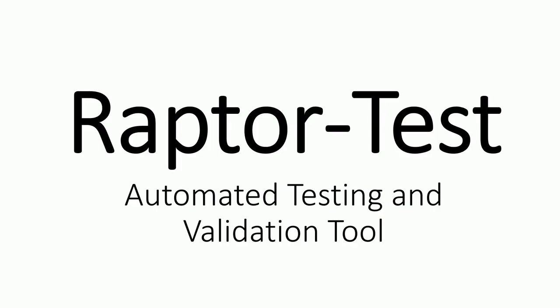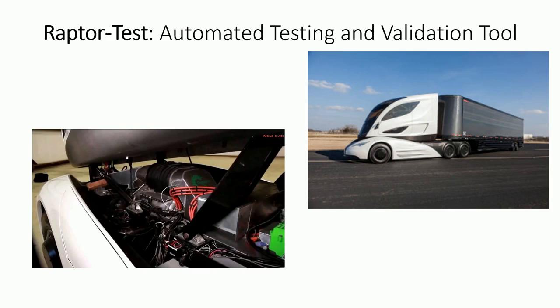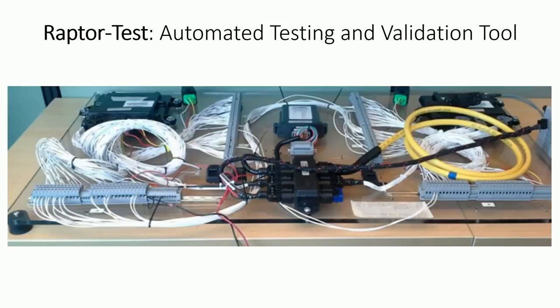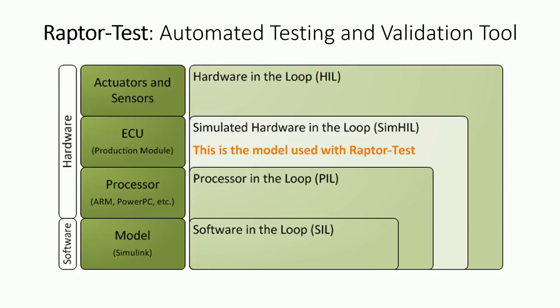Before testing unproven control software on the intended vehicle, platform, or prototype hardware, which may have cost millions of dollars to create, developers can first validate their control software on a test bench setup in their office or lab using Raptor Test. Raptor Test essentially allows developers to work out 90% of the bugs in their software before they try to run it on the real system. Raptor Test facilitates simulated hardware-in-the-loop testing, which means developers can test their software while it's running on the same production control module they intend to use.